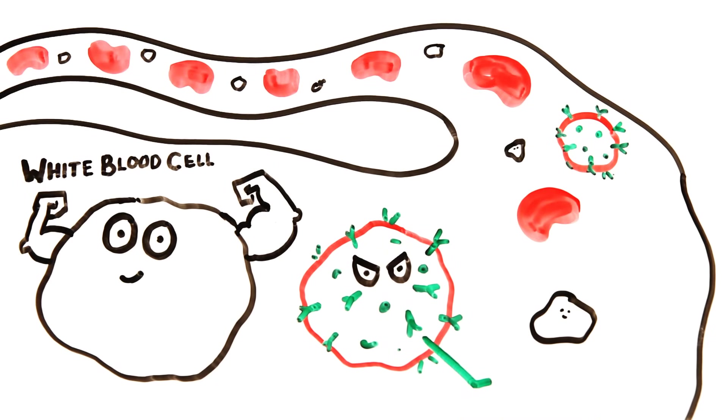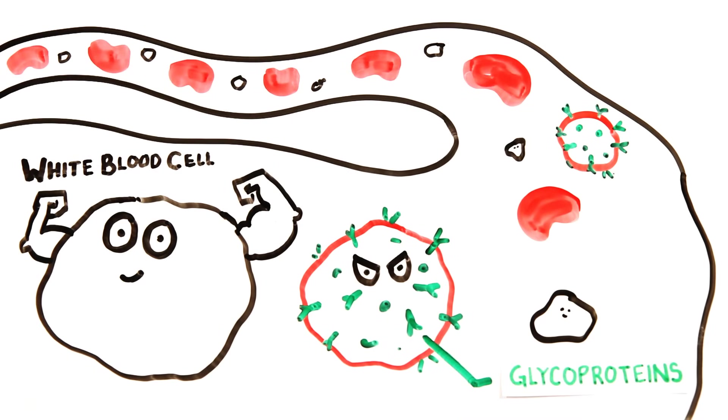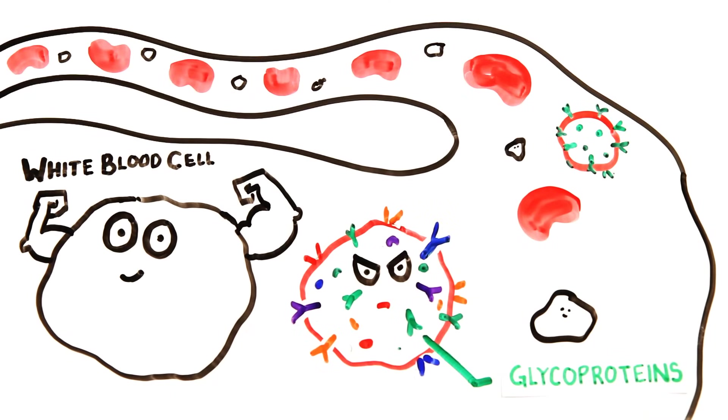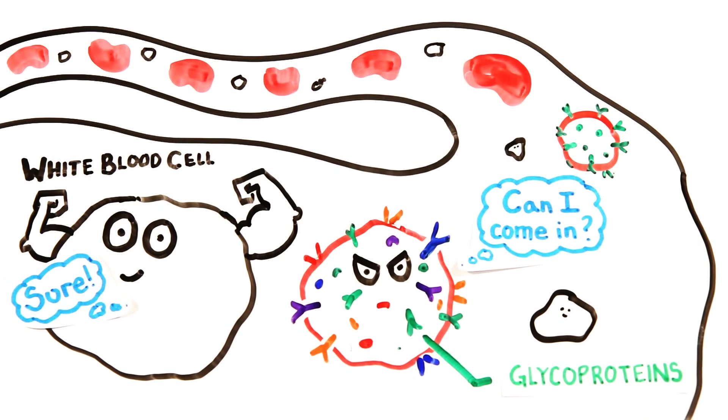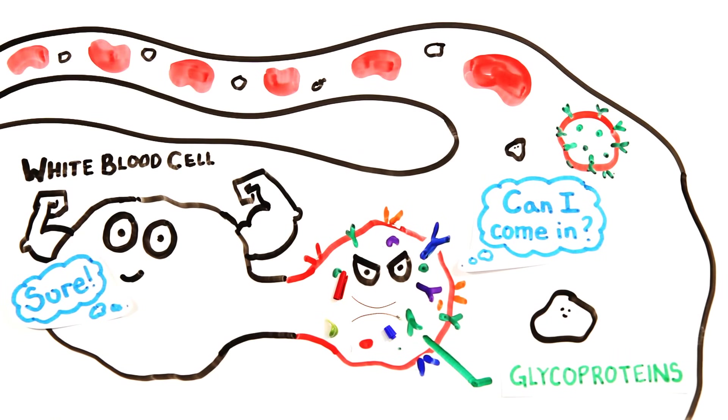The outer envelope of HIV is covered in glycoproteins which mutate frequently, ultimately tricking the T cell receptors to not recognize the virus. Once attached to specific proteins on the T cell, it begins to fuse the membranes together and eventually enters the cell where it releases two viral RNA strands and three essential replication enzymes.